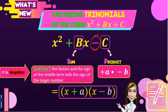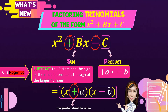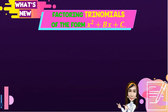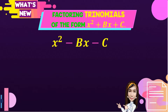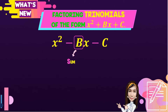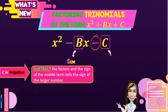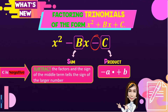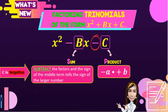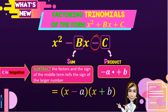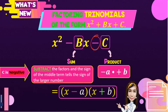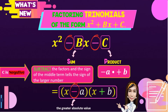So, take note: if the middle term is positive, positive is the sign of the greater absolute value. For the last case, given x squared minus bx minus c, when c is negative, we subtract the factors and the sign of the middle term tells the sign of the larger number. For the product, we have different signs — negative a times positive b gives negative c. So we obtain the quantity x minus a times the quantity x plus b. As you noticed, negative is the middle term, so negative is the sign of the greater absolute value.